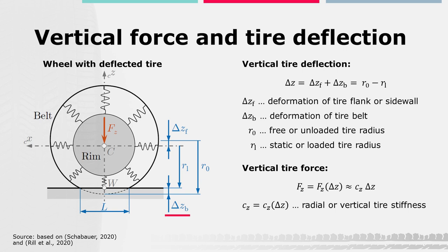The deflection delta ZB of the tire belt and the deflection delta ZF of the tire flank. These two together form the overall vertical tire deflection delta Z, which can also be determined by the difference between the unloaded tire radius R0 and the loaded tire radius RL in a more convenient way.